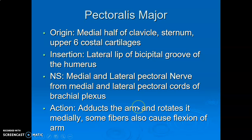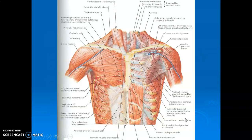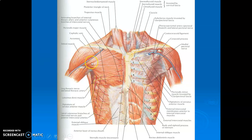Pectoralis major causes adduction, medial rotation, and flexion of the arm at the glenohumeral joint.